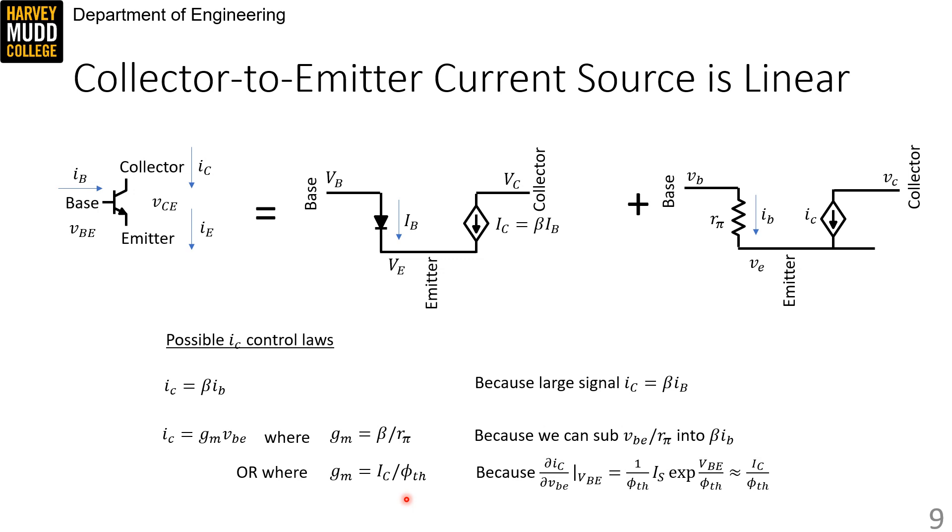That's a nice way to calculate GM using small signal parameters. We can also find GM using large signal parameters by taking a derivative of IC with respect to VBE, like we have with all of our other small signal elements. Chasing that through, including substituting for IS e to the VBE over Phi TH, we find that our local slope is IC over Phi TH.